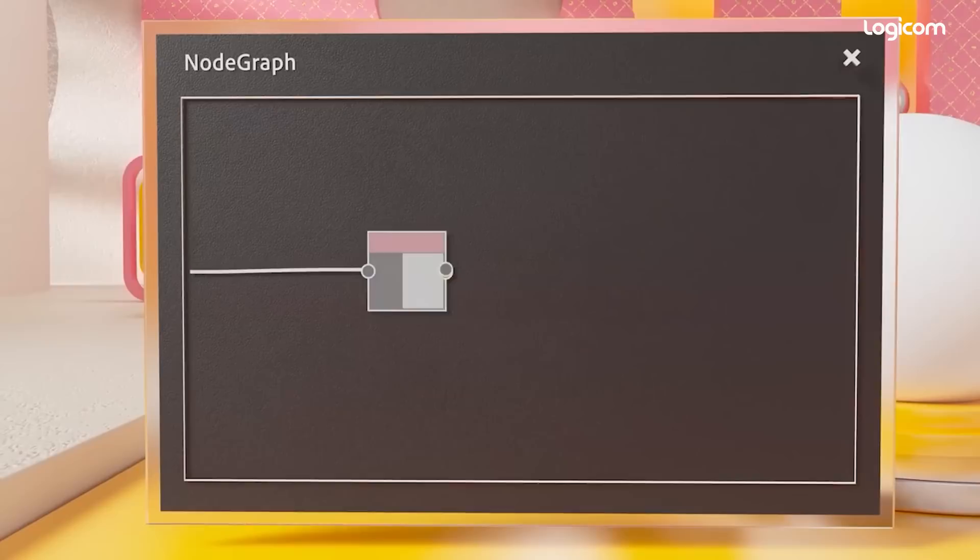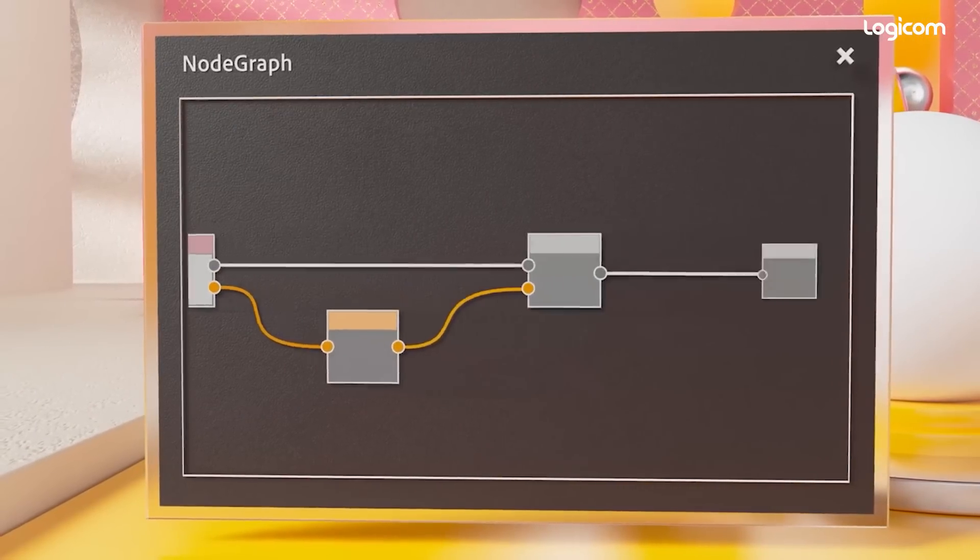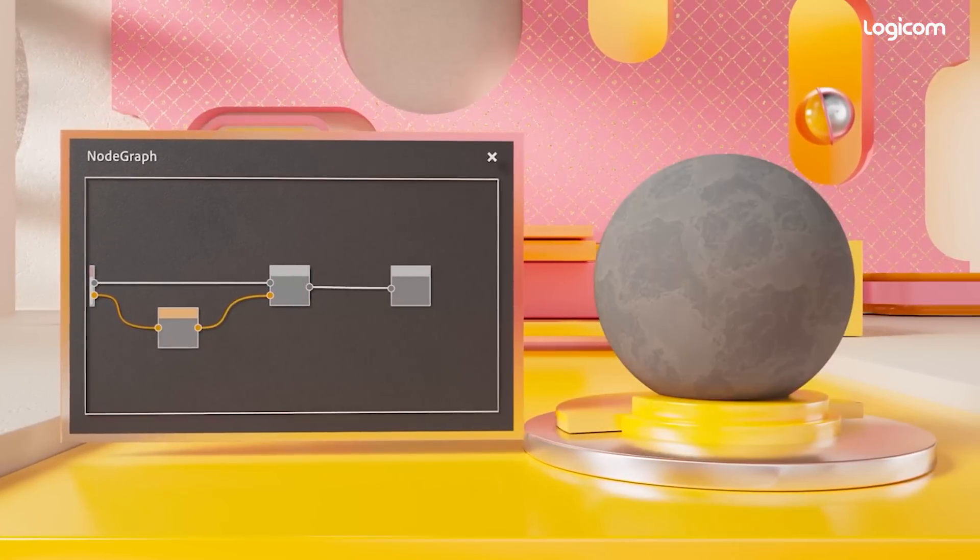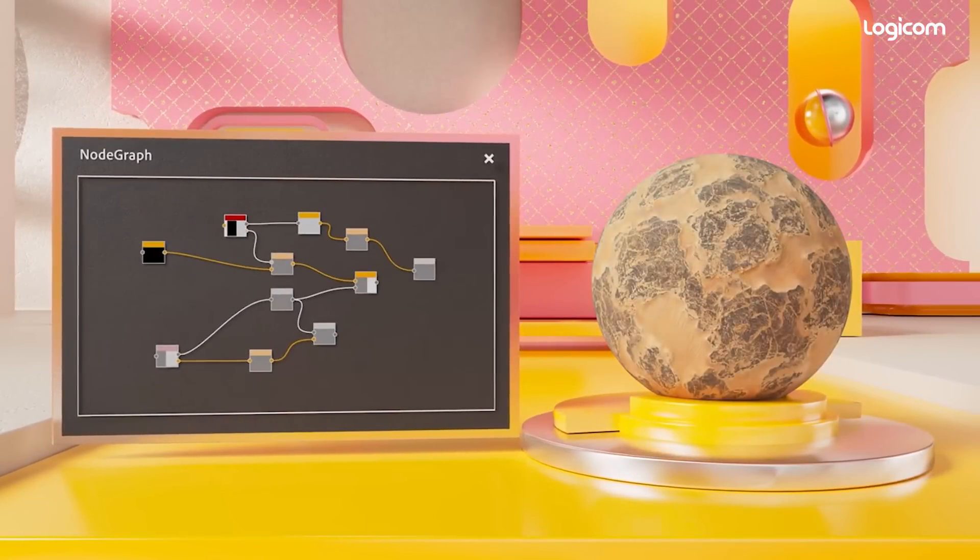You connect, split, and merge nodes together to build your final result. Graphs and nodes are easy to get started with, yet they allow you to build incredibly deep and complex systems.